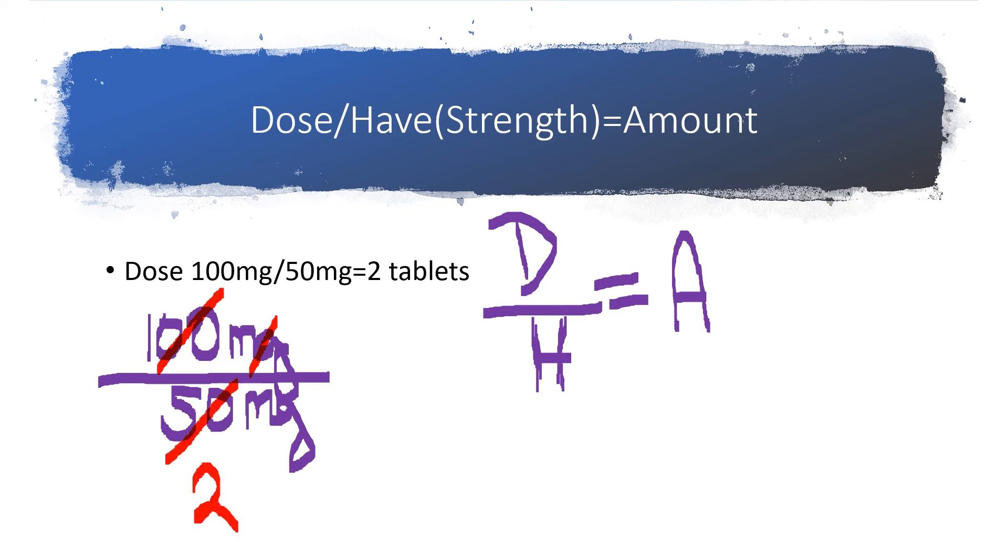And two what? Remember you always cross out the units, the unit cross out. So it's two tablets. That's what you have.